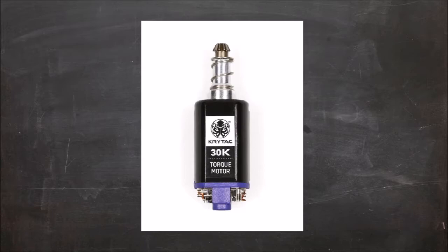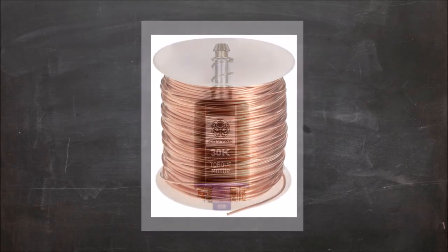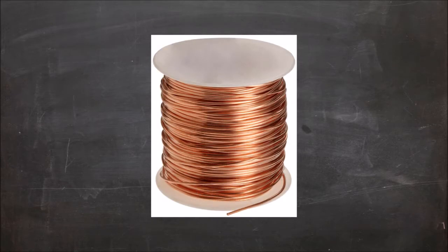The determining factor of the strength of the magnets by design is the copper wrapping. The thickness or gauge of the copper wire and the number of wraps around each motor magnet determines strength. Finally, there are the function specs: AEG motors are defined by RPM and TPA. RPM means rotations per minute, TPA means turns per armature.